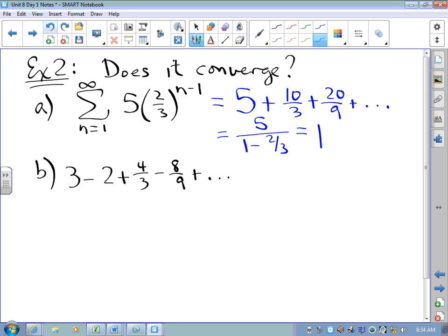And this appears to be a geometric series where the first term is 5 and the r is 2 thirds. And so, that appears to be 15. Now, that formula only works if the absolute value of r is less than 1, which it is. So, we say yes.